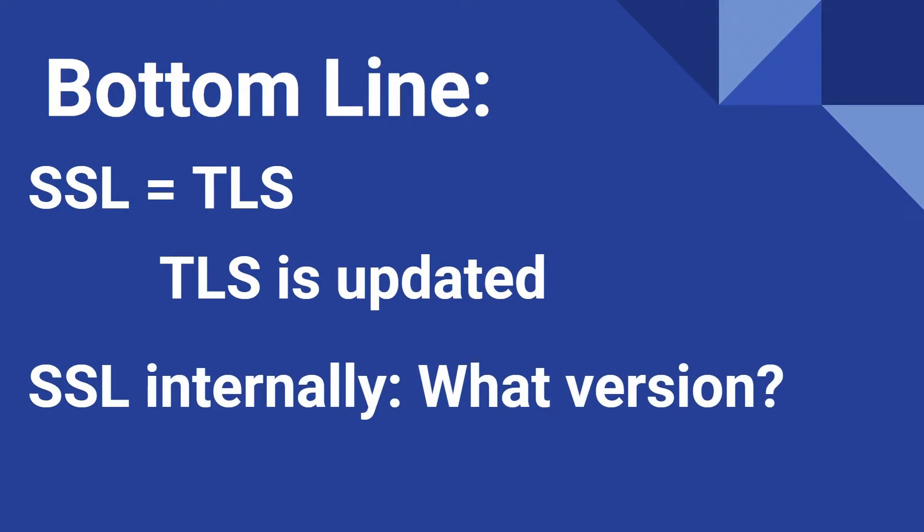For example, if you're maintaining a web application and your internal folks are saying they use SSL, it's important to distinguish whether it's SSL 3.0 or TLS 1.2. If you're running a public-facing web application, it's essential that you have the more secure version, which is TLS 1.2, and not SSL 3.0.